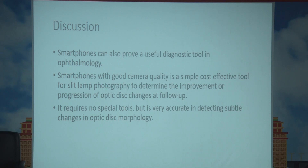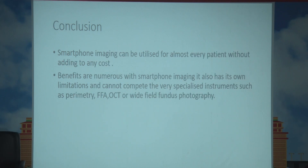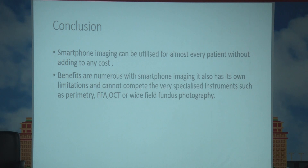Smartphones can prove a useful diagnostic tool in ophthalmology. A smartphone with good camera quality is a simple, cost-effective tool for slit lamp biomicroscopic imaging to determine improvement or progression of optic disc changes at follow-up. It requires no special tools but is accurate in detecting subtle changes in optic disc morphology. Smartphone imaging can be utilized for almost every patient without additional cost, though it has limitations and cannot compete with specialized instruments such as perimetry, FFA, OCT, or wide-field fundus photography.